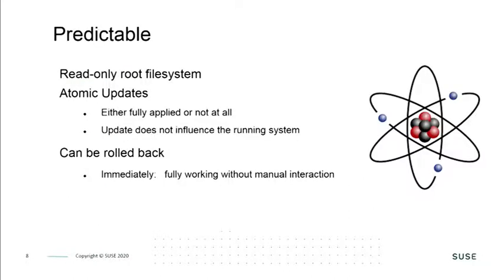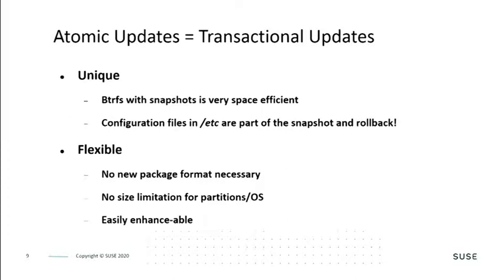Because OpenSUSE Micro OS is an immutable operating system, the file system is read-only. Atomic updates mean that any changes are made in full or not at all. The system will roll back immediately if the update is not successful. OpenSUSE Micro OS uses the BtrFS file system, which gives us very efficient storage and snapshot capability. All configuration files stored in the /etc directory are included in the snapshot and are rolled back if the update didn't take. OpenSUSE Micro OS is flexible with no new package formats or size limitations on the partitions.